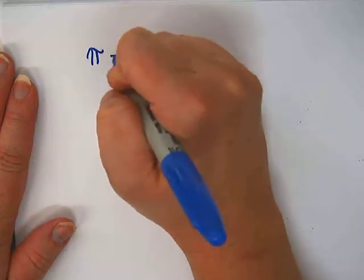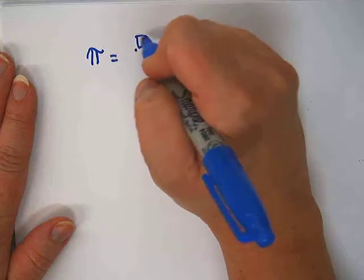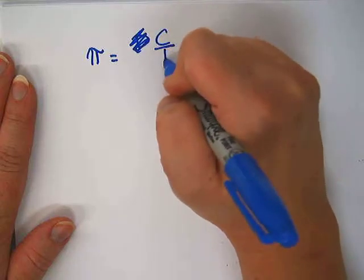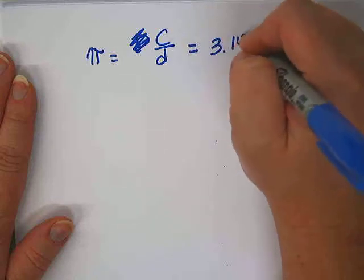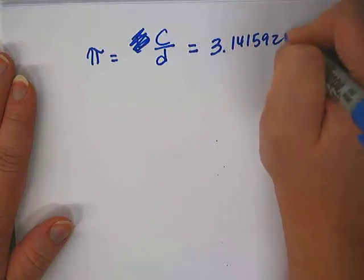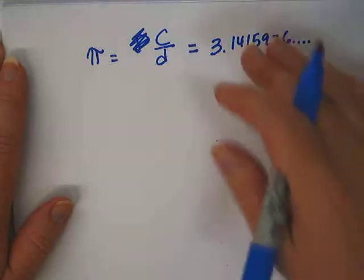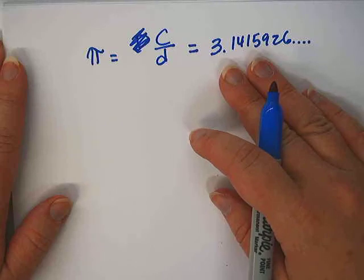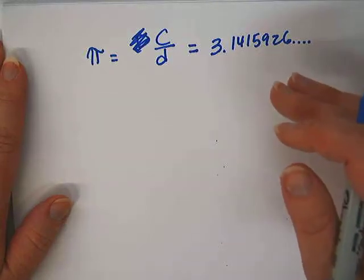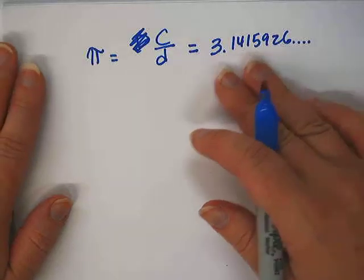You know how we have this number pi that represents the diameter of a circle divided, no wait, it's the circumference of a circle divided by the diameter. And of course it's approximately equal to 3.1415926. Computers apparently have calculated this to millions and millions of decimal places, but so far it doesn't repeat, it doesn't stop. It's an irrational number, sometimes called a transcendental number.